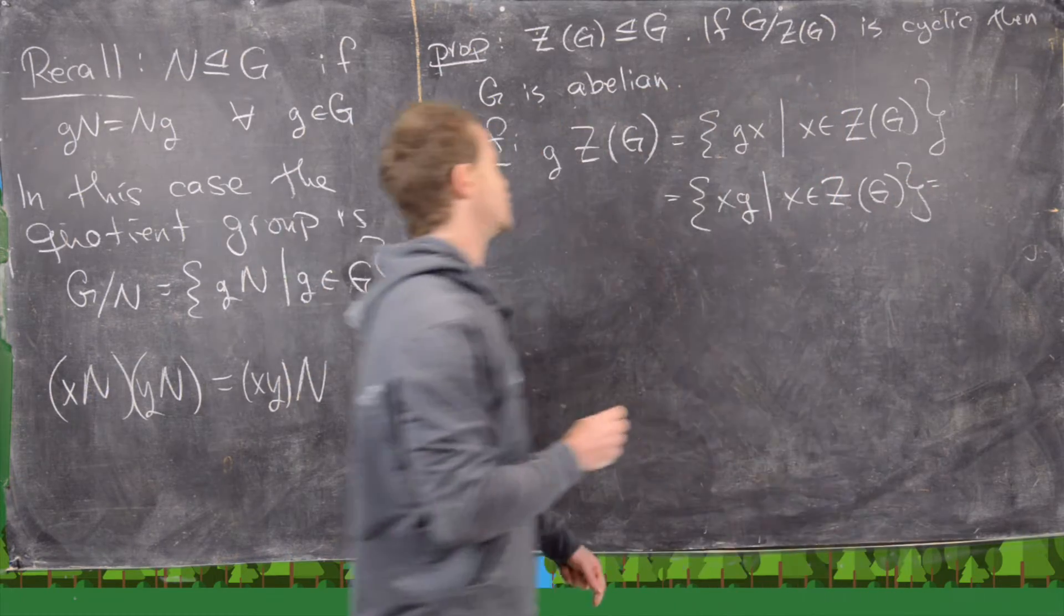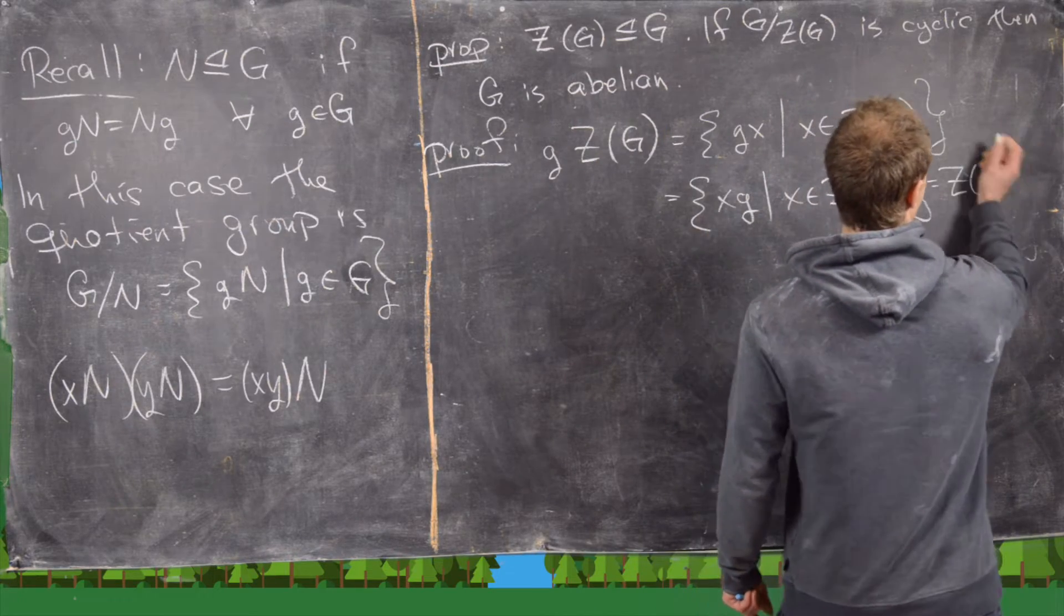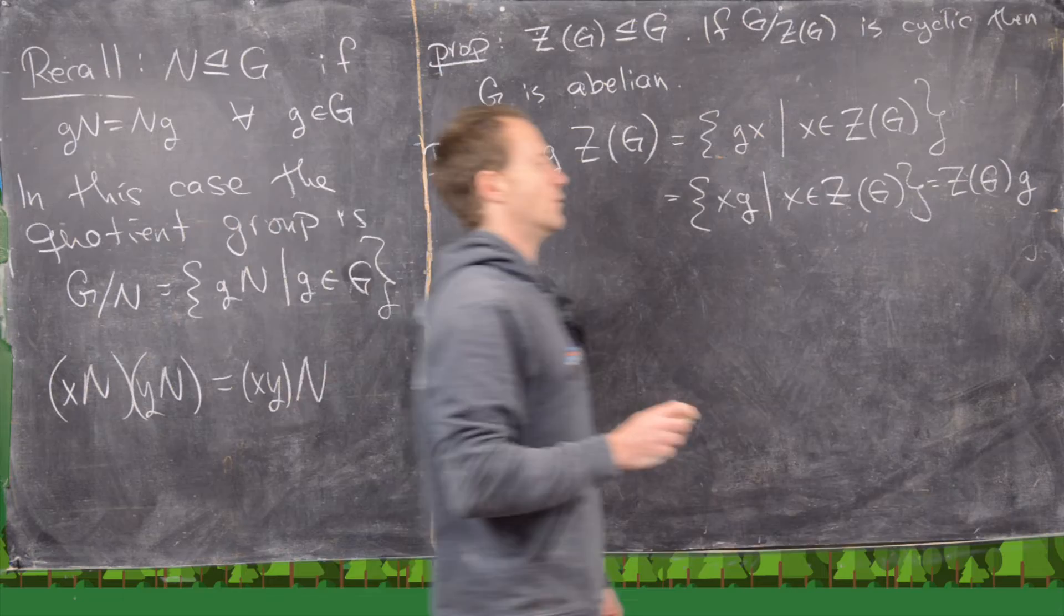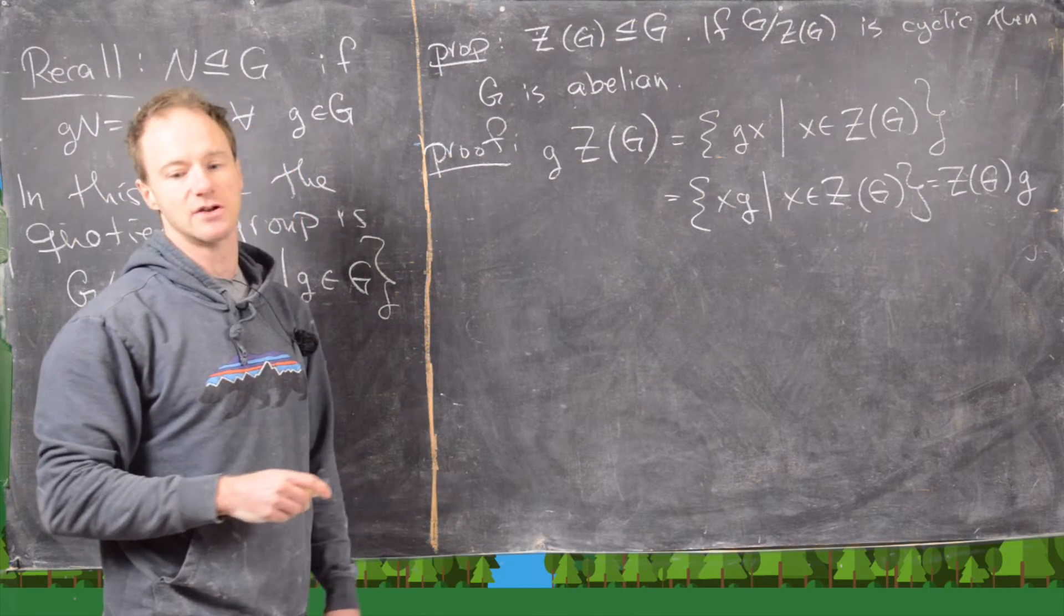But now we can pull that G out of the right-hand side, and that's going to be the center with the right coset G. Okay, good. So yes, it is normal.